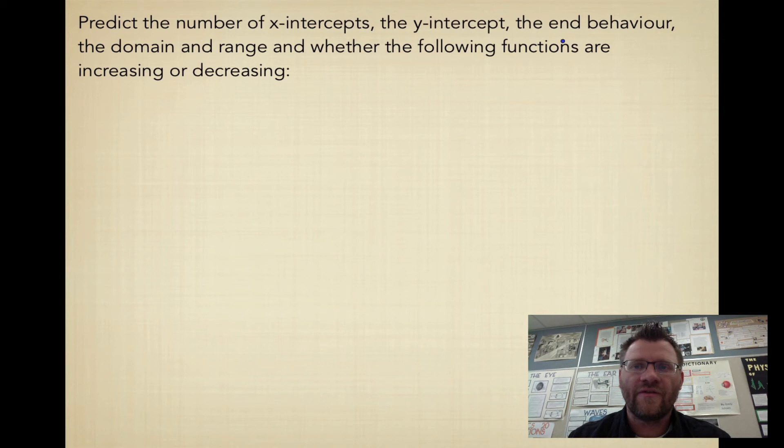Predict the number of x-intercepts, the y-intercept, the end behavior, the domain and range, and whether the functions are increasing or decreasing. So f of x equals 2 times 5 to the power of x. Number of x-intercepts, there are none because it is an exponential function. Exponential functions don't cross that x-axis. The y-intercept is when x equals 0. And so if x equals 0, y is just equal to 2. So our y-intercept is 0,2.